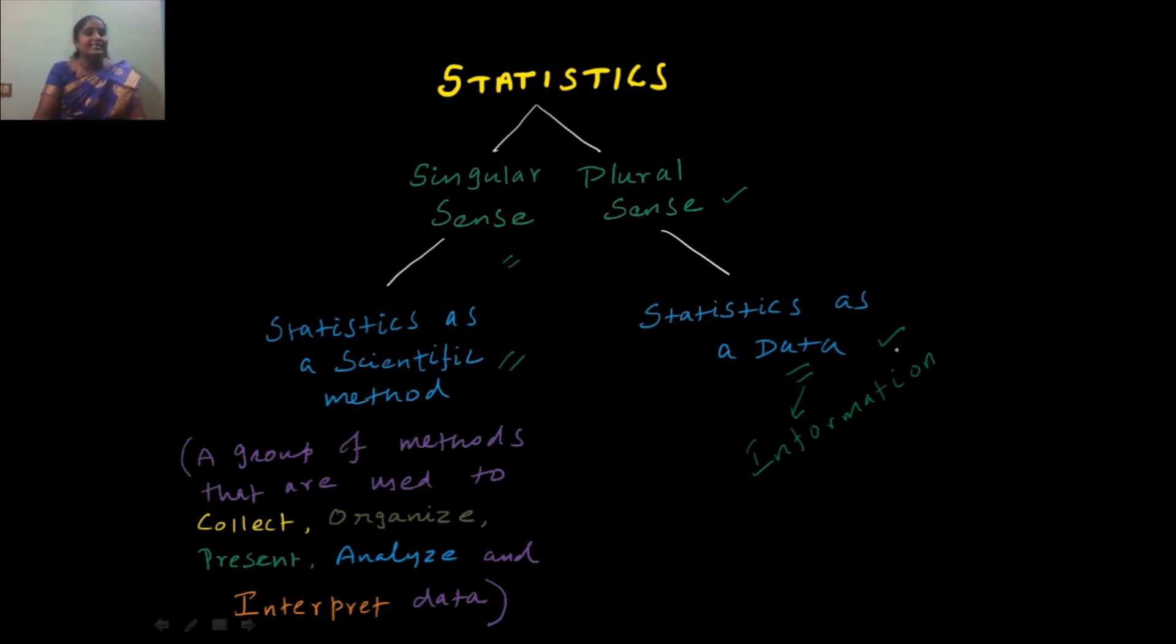Let us come back to singular sense. Statistic as a singular sense means statistic as a scientific method. That means a group of statistical methods that are used to collect, organize, present, analyze and interpret data. Let me explain all these stages in detail here.